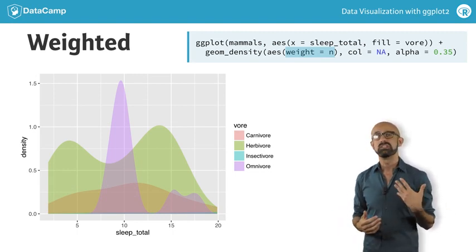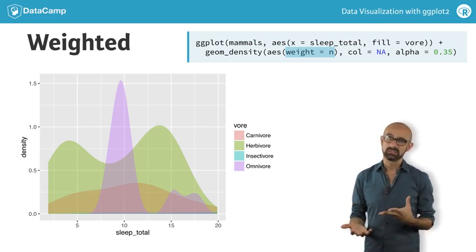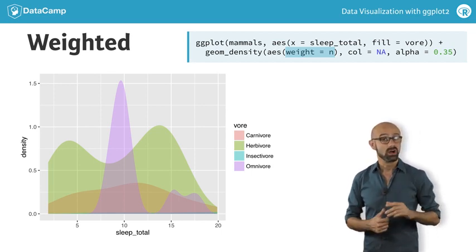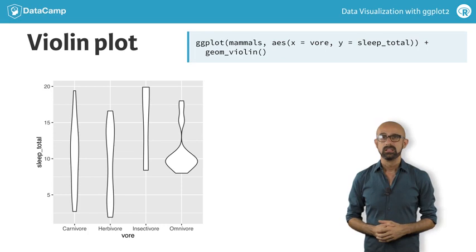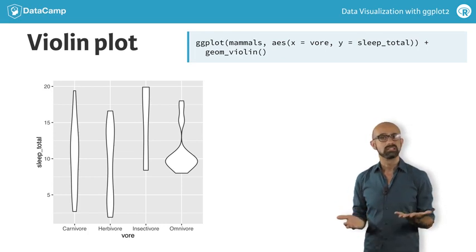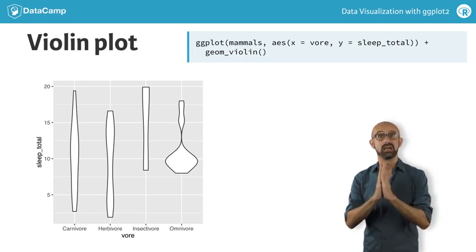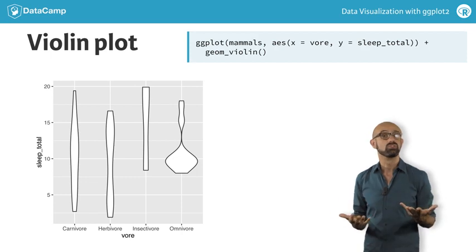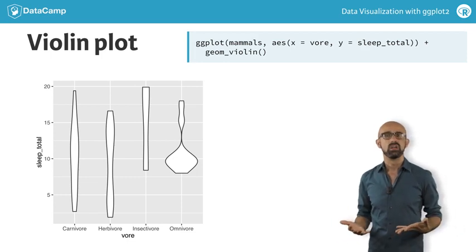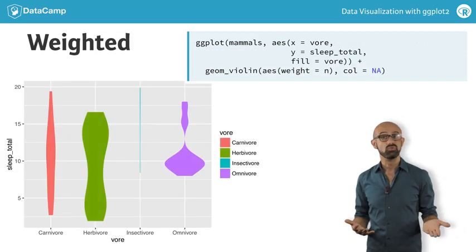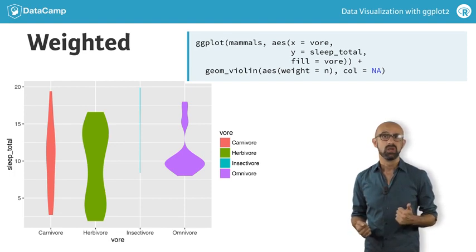If we want to see multiple density plots side by side, we could facet our plot, but there is an alternative. The violin plot is a relatively new plot type which is gaining in popularity. It basically puts a density plot onto a vertical axis and then mirrors it to create a symmetrical two-dimensional shape, which can really aid in comparing different distributions. Just like with the regular density plot, we should also consider weighting each group according to its n value. Once again, we see that insectivores are not very abundant.